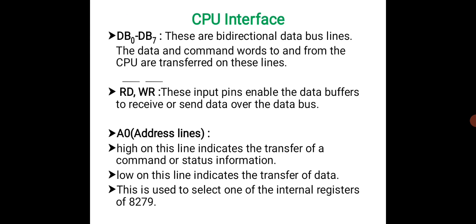This is used to select one of the internal registers of 8279. Chip select, as I told you, low on this line will enable 8279 for normal read or write operation.